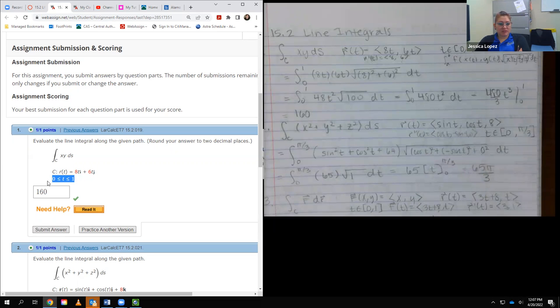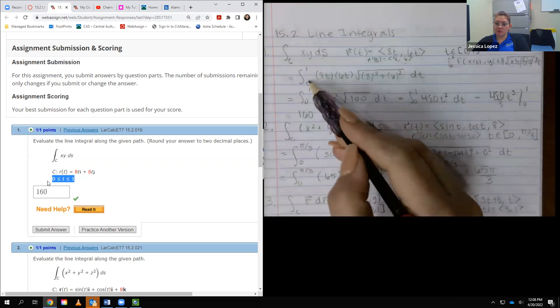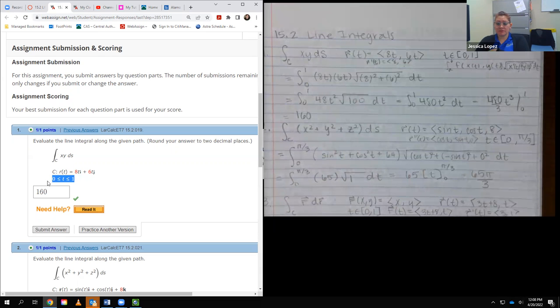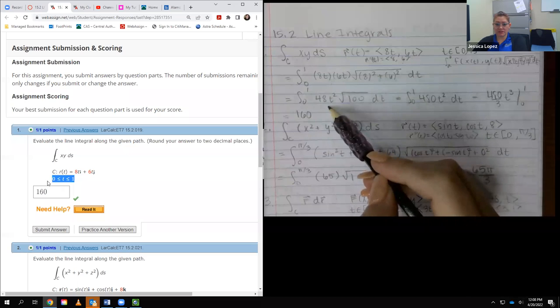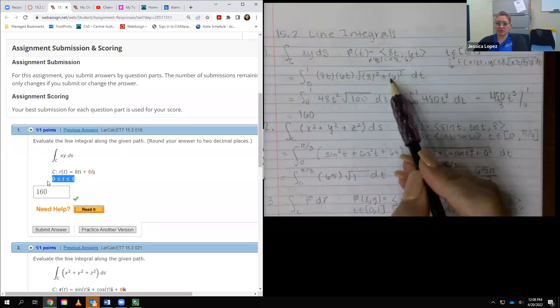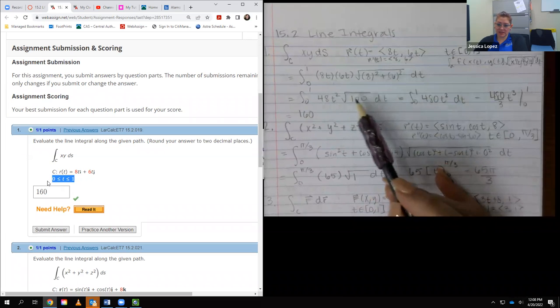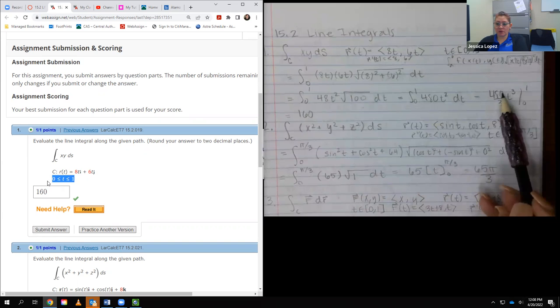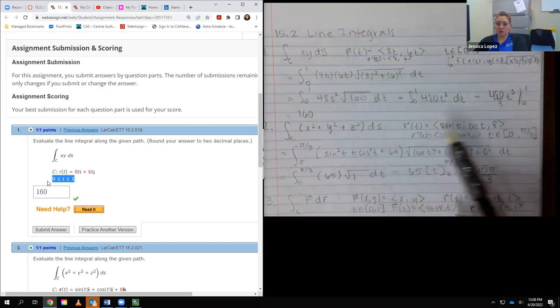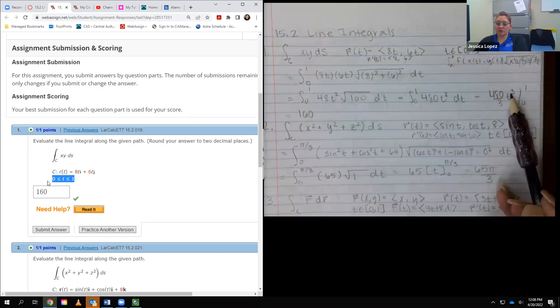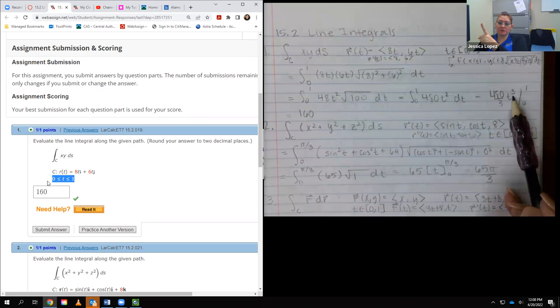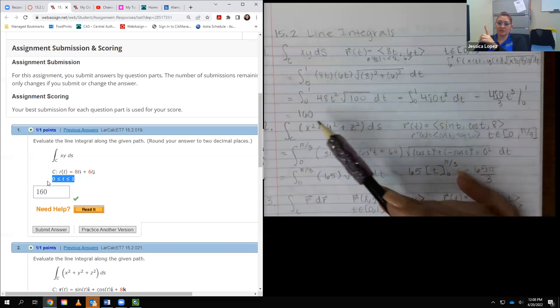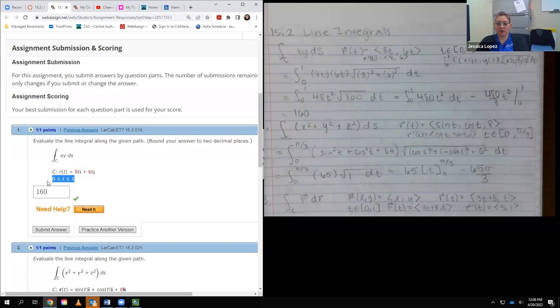And since my t values were between 0 and 1, my bounds of integration are between 0 and 1. So I did multiply 8t times 6t, and I got 48t squared. This is 64, this is 36, and their sum is 100. So it's actually just 10, and 48 times 10 is 480. So I did integrate this. I get 480 over 3 times t cubed, which is actually just 160. And if you plug in 1 for t cubed, you get 1, and when you plug in 0 for t cubed, you get 0. So 1 minus 0 is 1, and then that 1 times the 160 just ended up being 160 after I evaluated it.